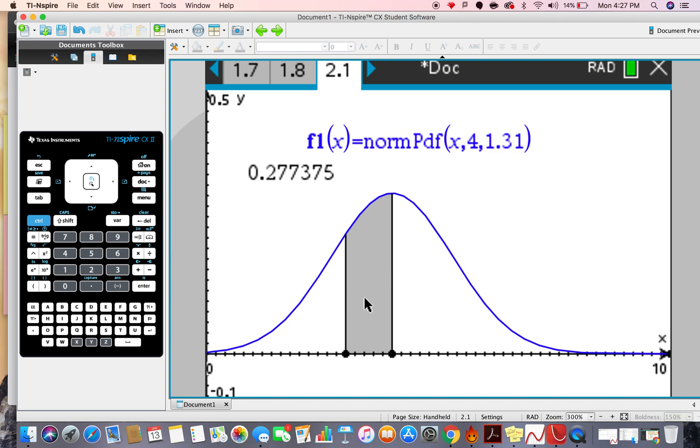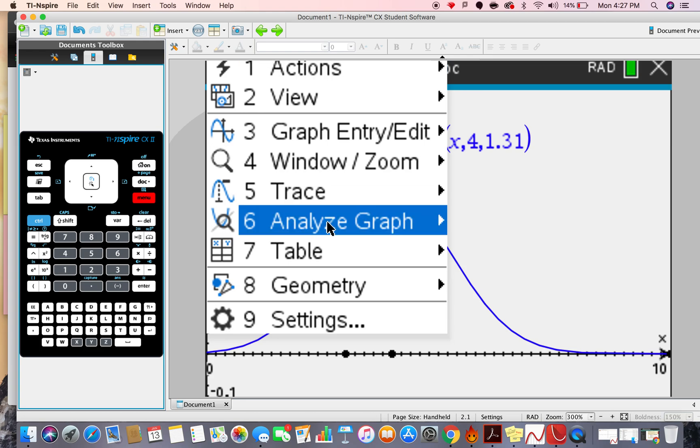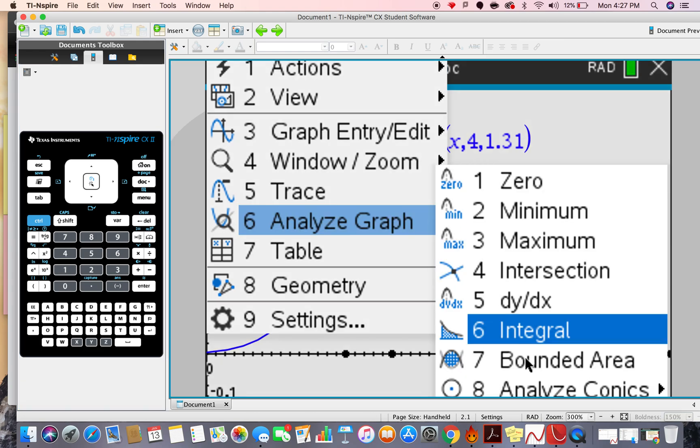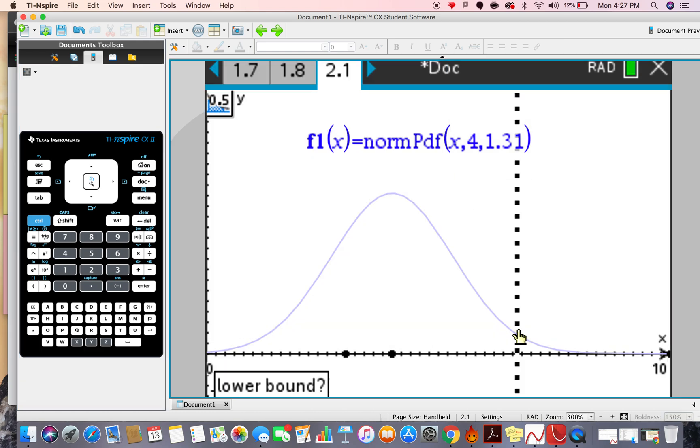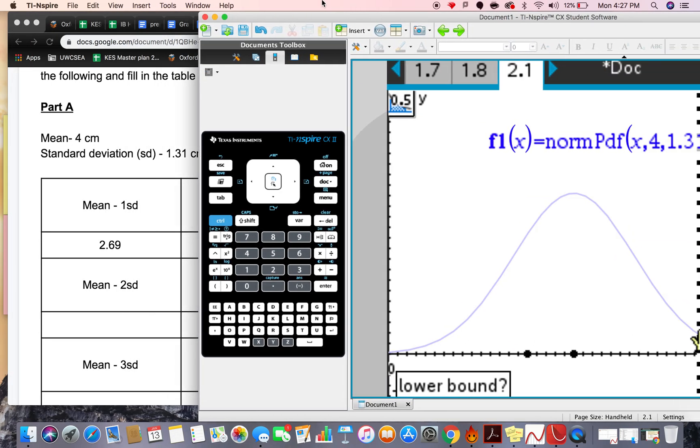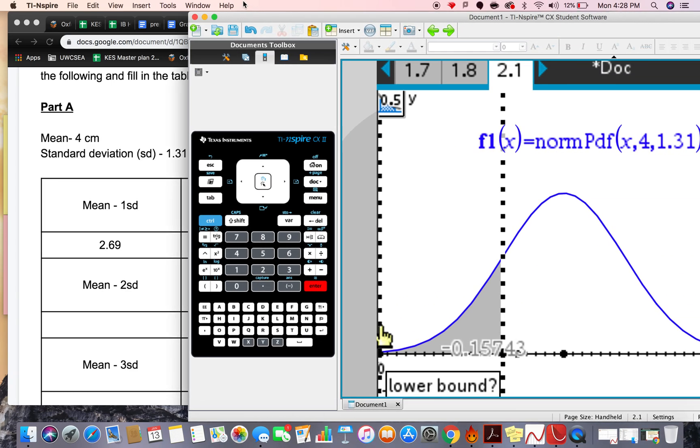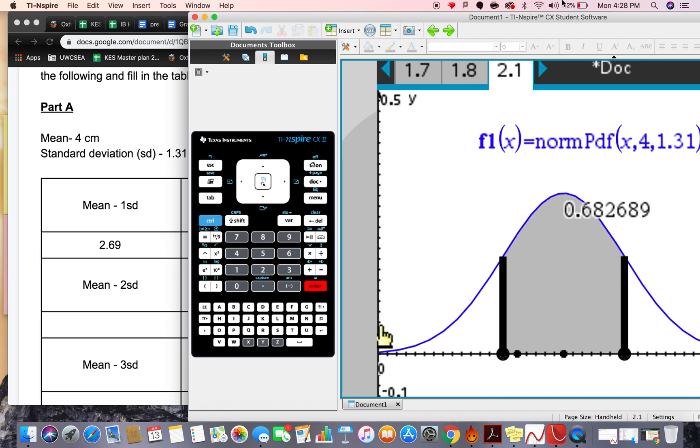So, let's go back here. I can click on the previous answer, just delete it. Menu, analyze graph, integral, number 6, and what were the lower and upper bounds again? Lower bound was 2.69, 2.69, and the upper bound is 5.31. So, that means that we're going to put 5.31, and there you go.